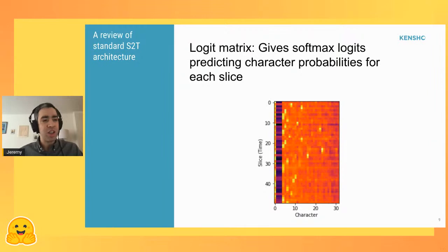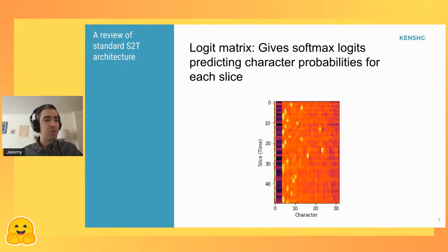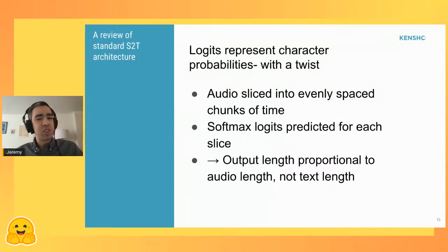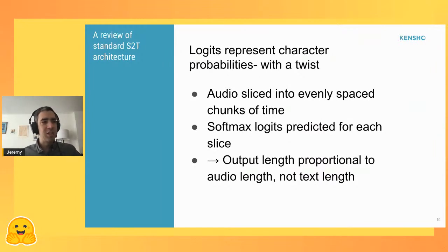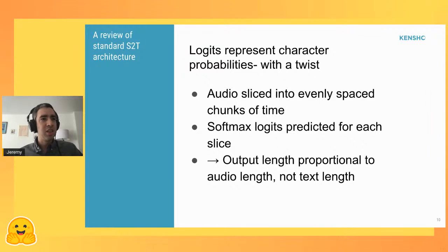This logit matrix typically gives you softmax logits predicting character probabilities for each time slice. Here's an example where the x-axis is the character out of a vocabulary of about 30 characters, and there are about 50 time slices. The key complication is that the output length is proportional to your audio length, not the text length you want to output. This is the core challenge that drives the need for the CTC process.